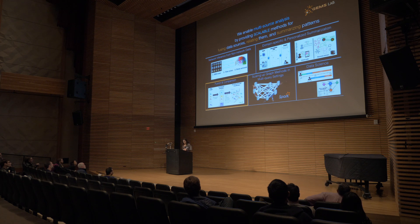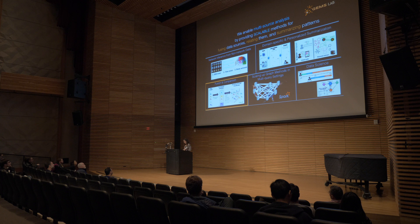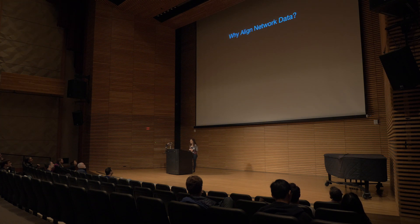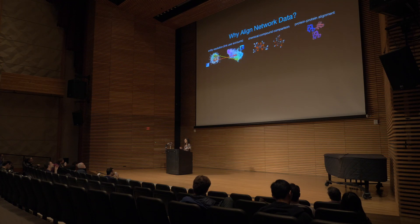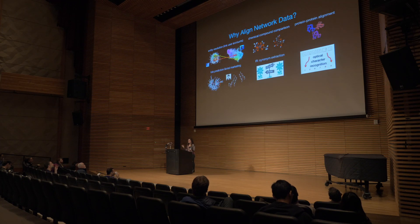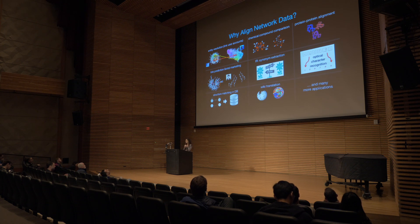Let me talk a bit more about the work we have done in fusing and comparing data sources. Why do we want to align network data? The reason is that there are a lot of different applications of network alignment across many disciplines. There are over 200 papers tackling different instances of this problem, ranging from entity resolution to chemical compound comparison to synonym extraction to translation to matching structures in databases.